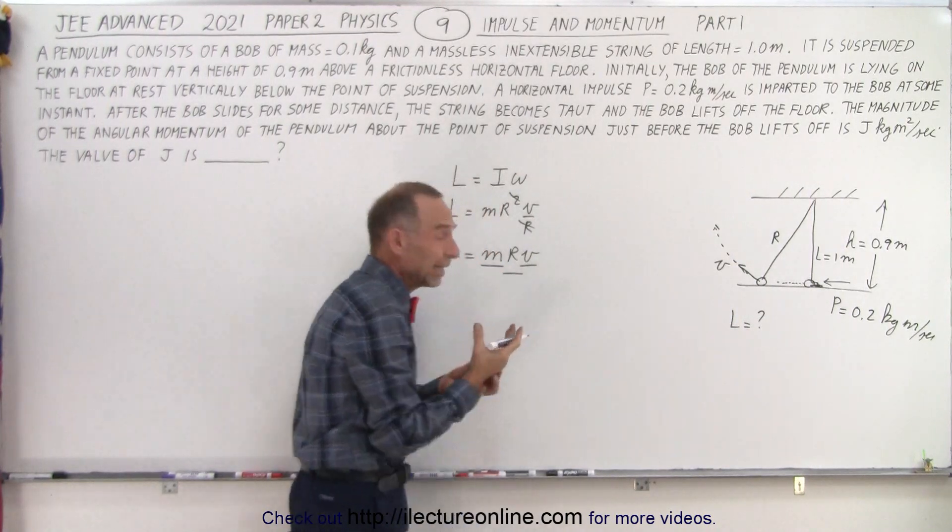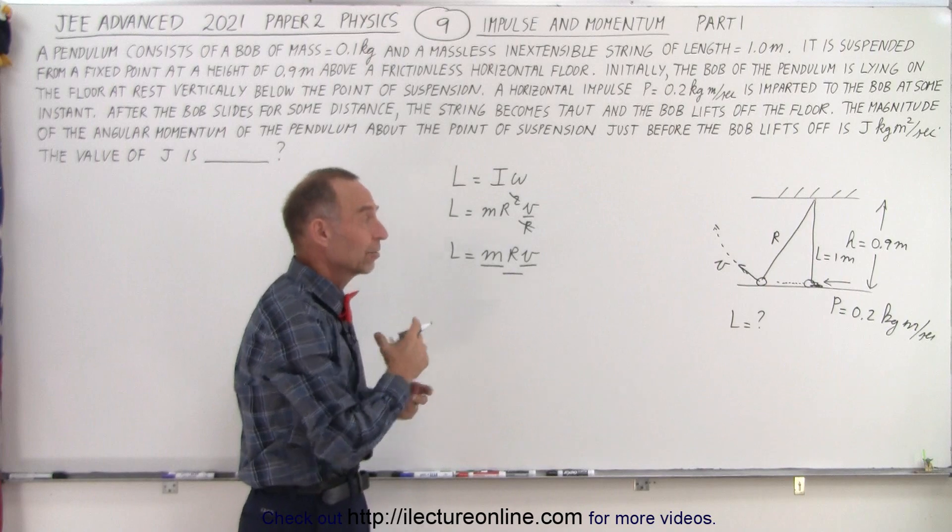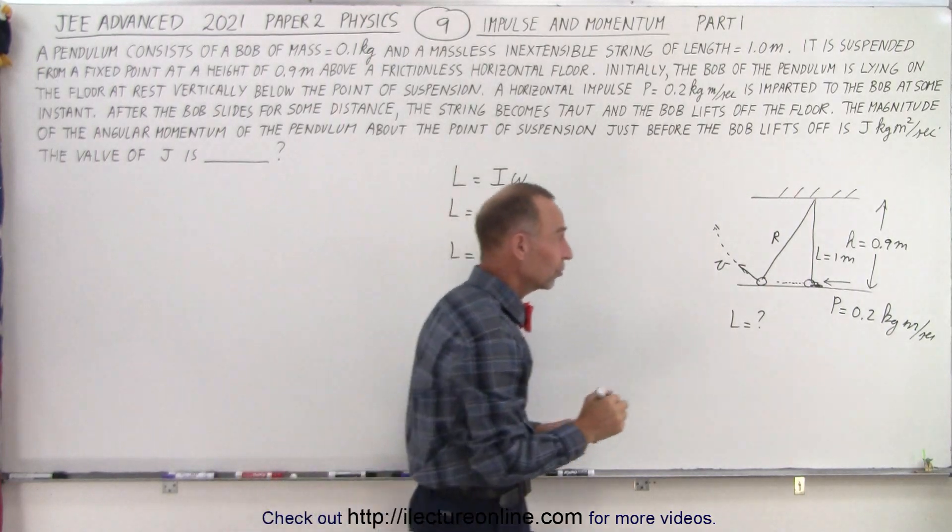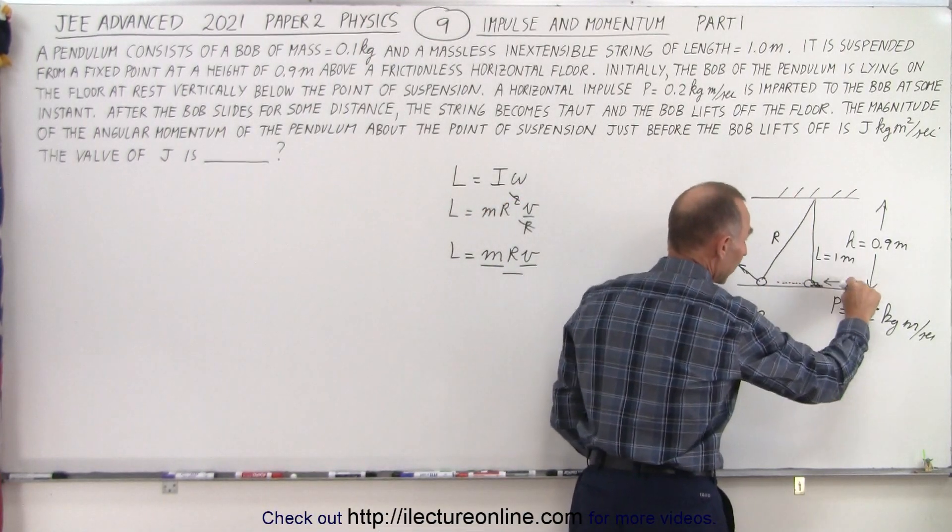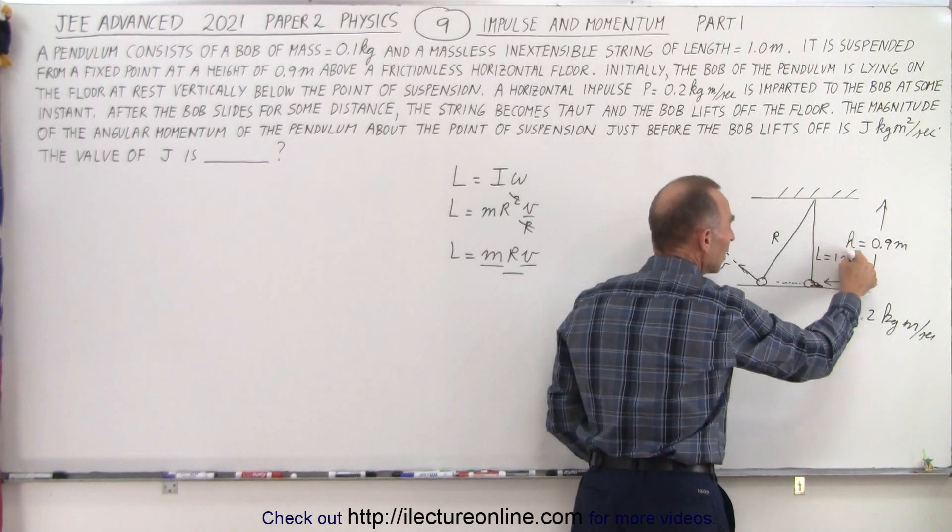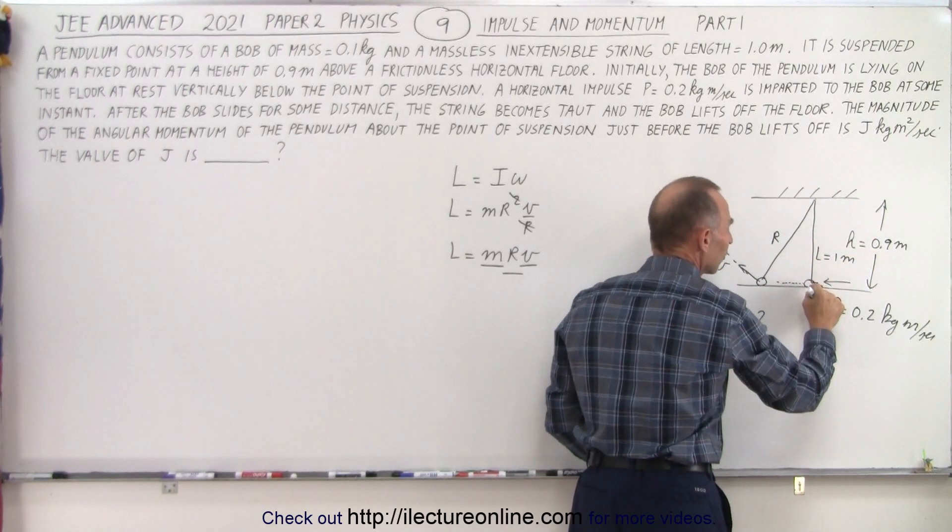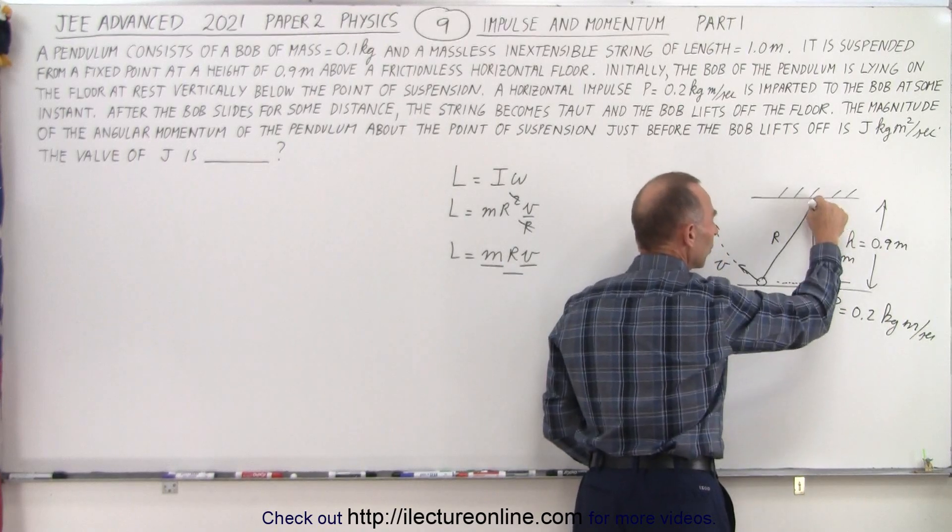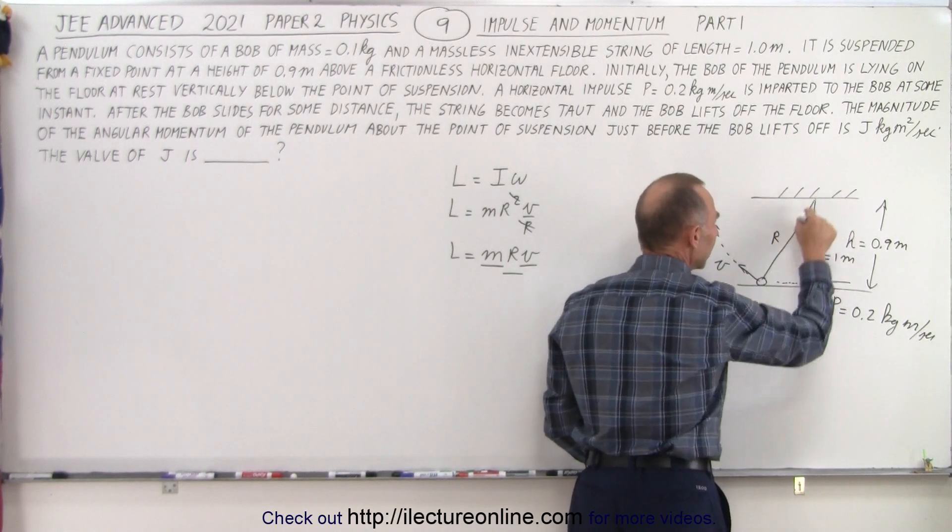r is equal to the height or the length of the string but it turns out since it's moving across the floor at this height, we want to take the range to be equal to the height, the distance from where the bob is moving to where it's attached rather than the length of the string.